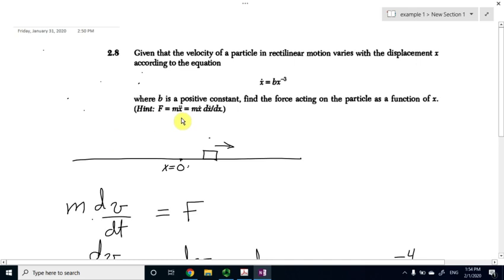We have a hint in the problem to use. Now, before we start solving the problem, let's make a comment. First, because this is one-dimensional motion, I'm going to draw my axis, which I will call the x-axis, and I will choose the origin x equals 0 somewhere on this axis.